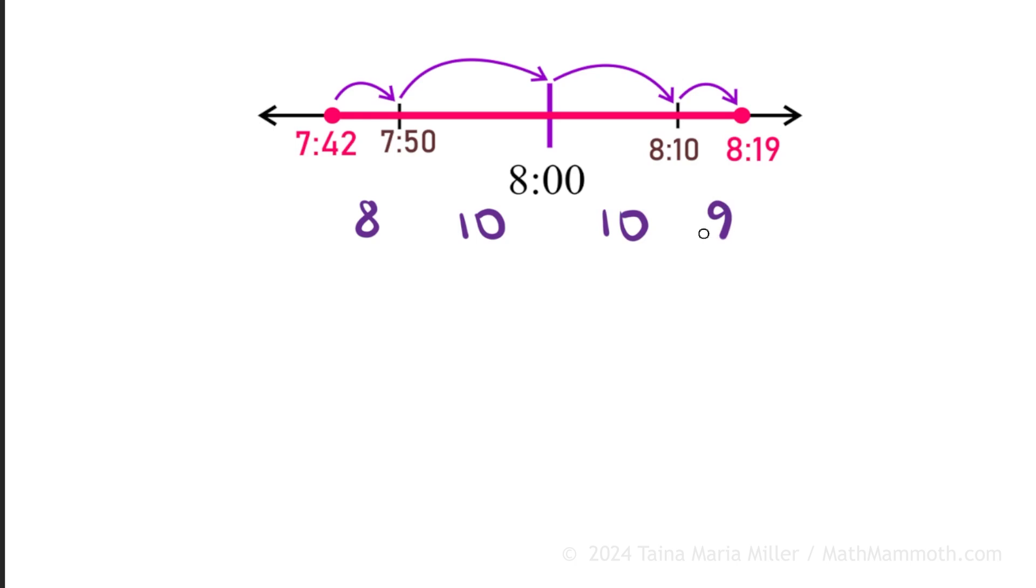And so now we just add all these: 10 minutes, and here's 20. 8 and 9 makes 17. You know your addition facts, right? 17 and 20? Yes, 37 minutes was the elapsed time.